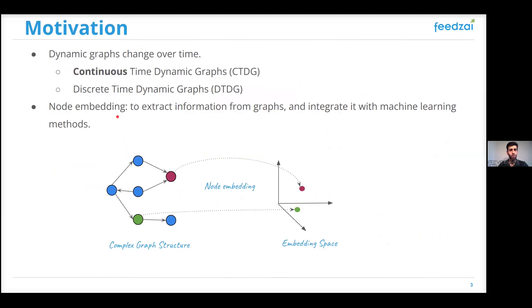Most real-world graphs are dynamic, meaning that they change over time, adding an extra layer of complexity. In order to extract information from these graphs, node embedding techniques need to be harnessed to reduce the dimensionality of the complex graph structure and represent nodes in an embedding space so that it can be leveraged by machine learning models.